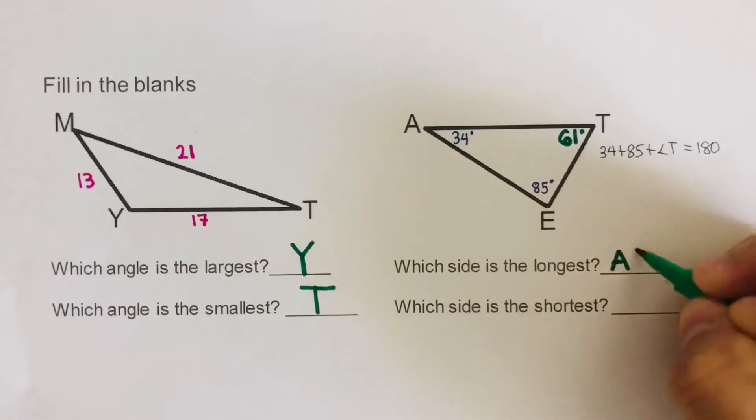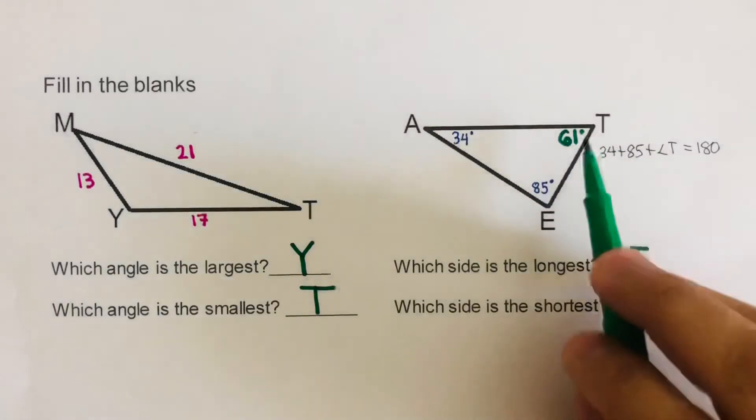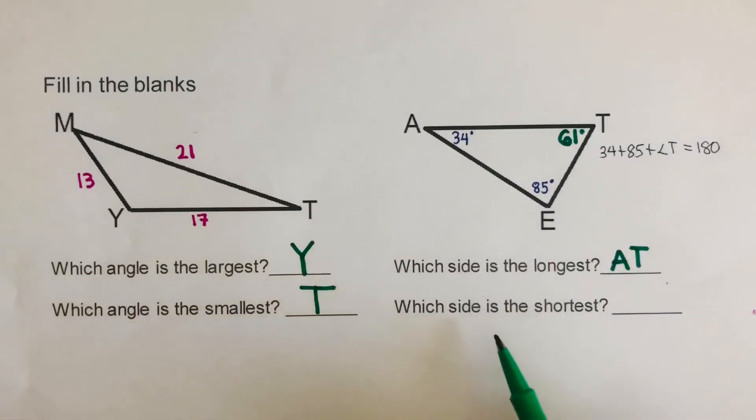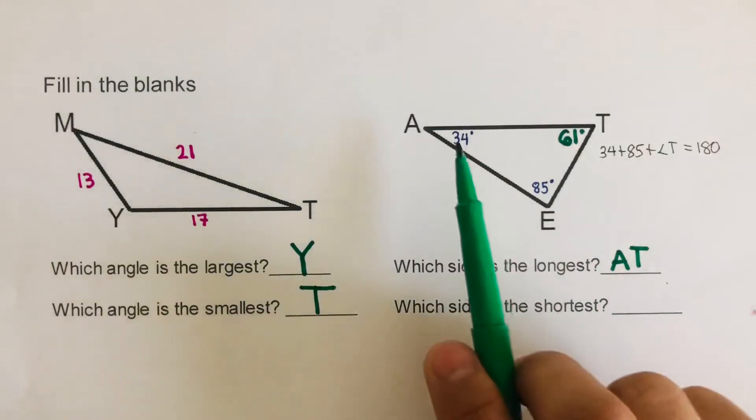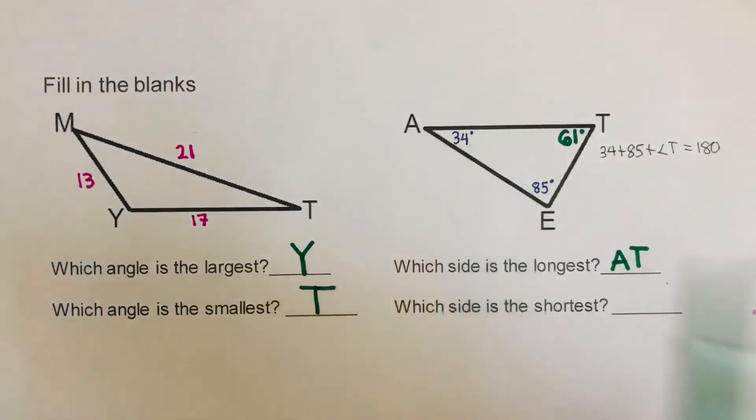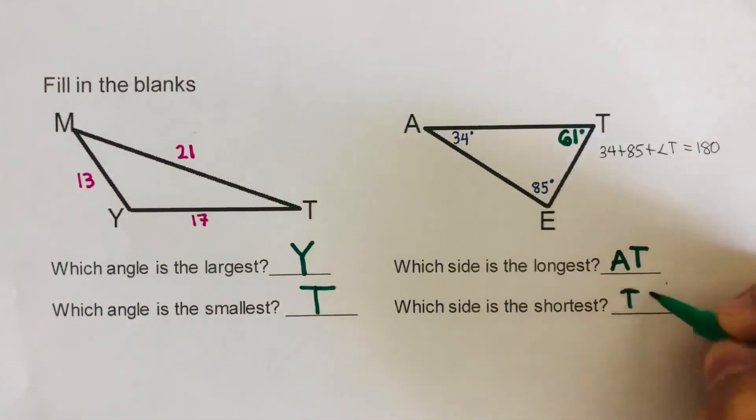Now others are going to say, can I write TA instead of AT? Yes, it doesn't matter. And then the shortest side here is across the smallest angle, which is 34. So that should be TE. Did you get the same answers as this?